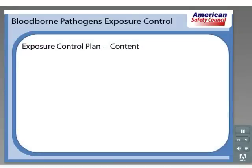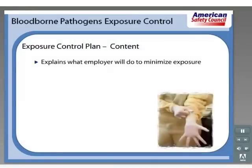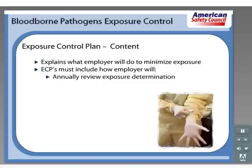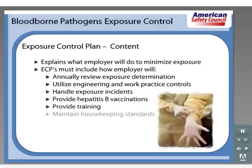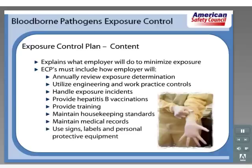An exposure control plan explains exactly what the employer will do to minimize exposure to bloodborne pathogens. This must include at least how the employer will, annually and as needed: review exposure determination; utilize engineering and work practice controls; handle exposure incidents; provide hepatitis B vaccinations; provide training; maintain housekeeping standards; maintain medical records; use signs, labels, and personal protective equipment.